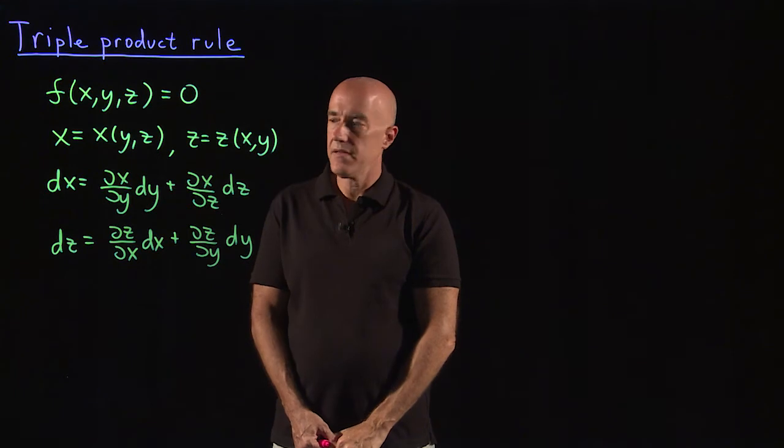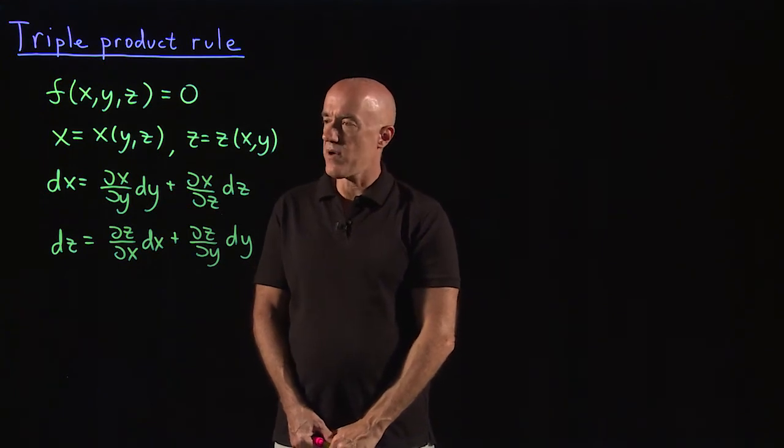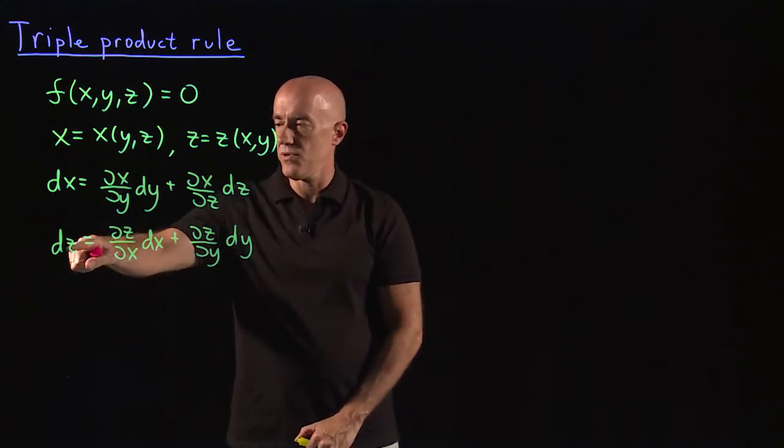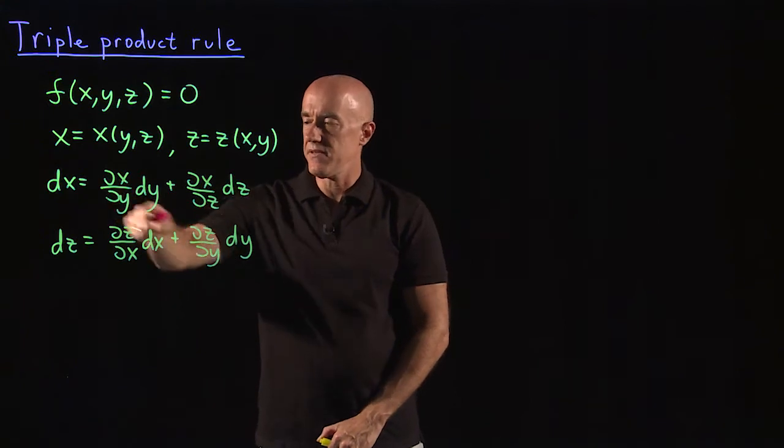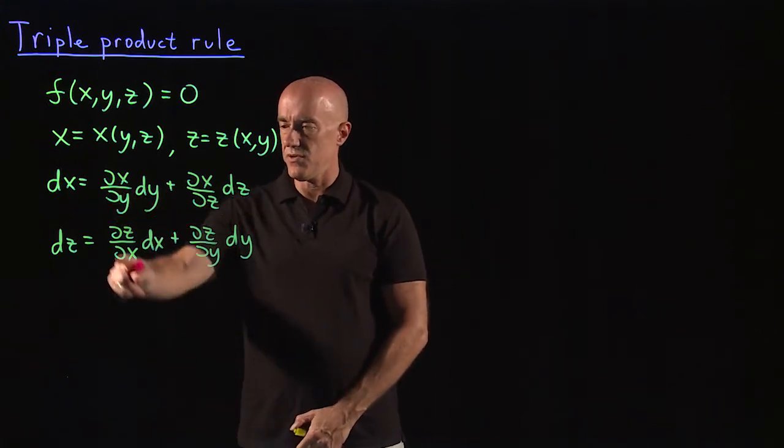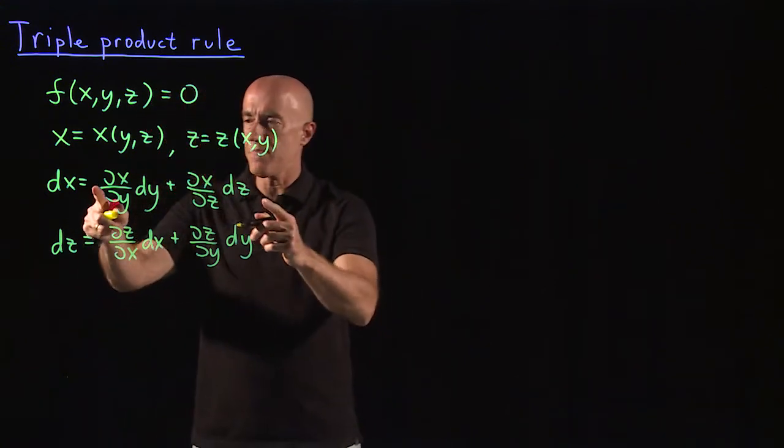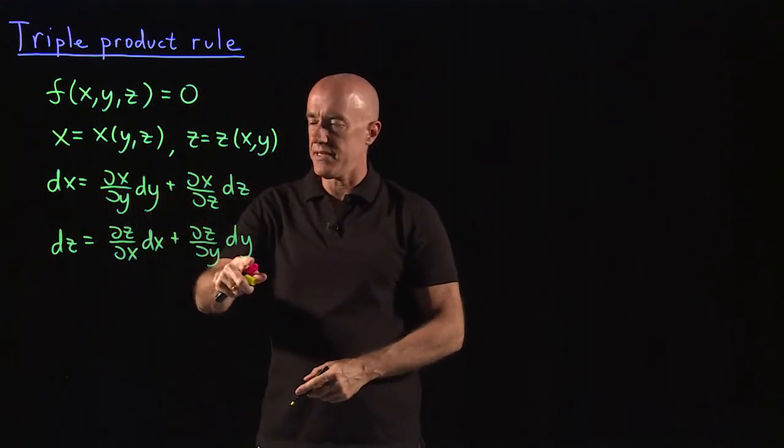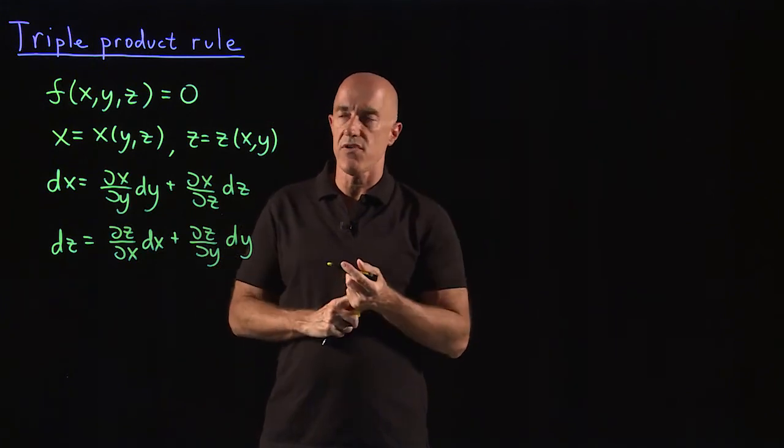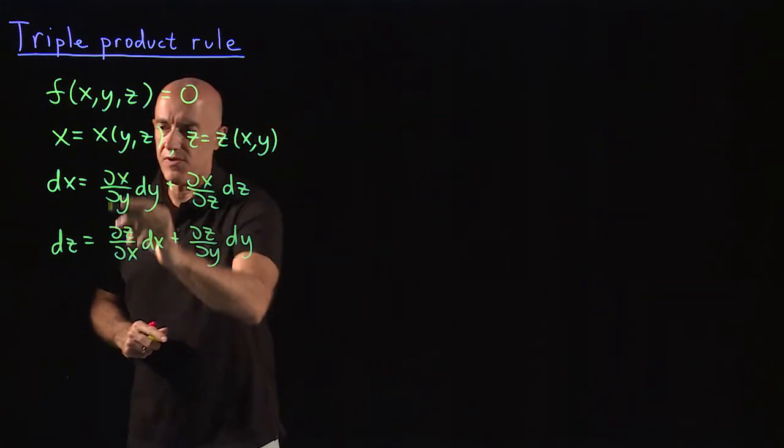All's good, I think. Now what I want to do is to eliminate dz from this first equation using the second equation, okay? Because I don't want dx, dy, dz, I only want to have two variables.